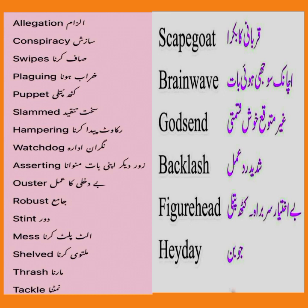Minister: وزیر۔ Ousted: بیدخل ہونے والا وزیراعظم۔ Robust: جامع، مکمل۔ Stunt: دور۔ Misplace: پلٹ پلٹ کرنا۔ Shelve: ملتوی کرنا۔ Thrash: مارنا۔ Tackle: نمٹنا۔ Scapegoat: قربانی کا بکرہ۔ Brainwave: اچانک سوجھی ہوئی بات۔ Godsend: غیر متوقع خوش قسمتی، خدا کی طرف سے ملی چیز۔